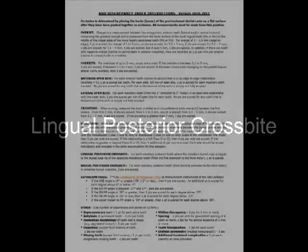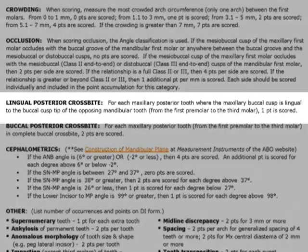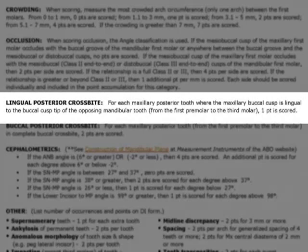Now we're going to move to the lingual posterior crossbite. For each maxillary posterior tooth where the maxillary buccal cusp is lingual to the buccal cusp tip of the opposing mandibular tooth, from the first premolar to the third molar, one point is scored.